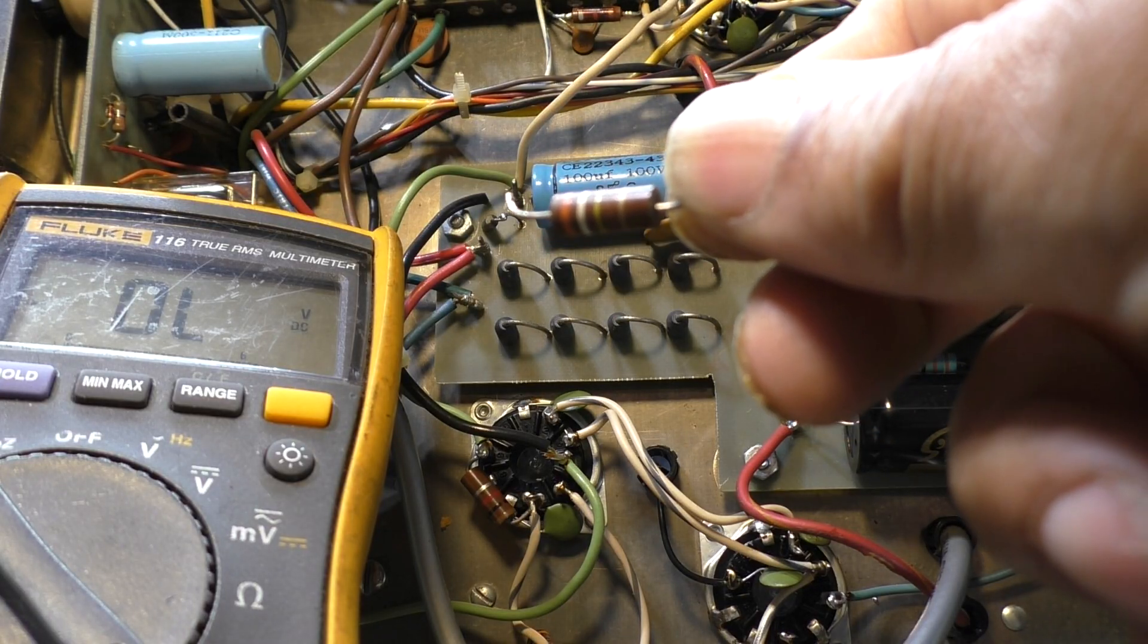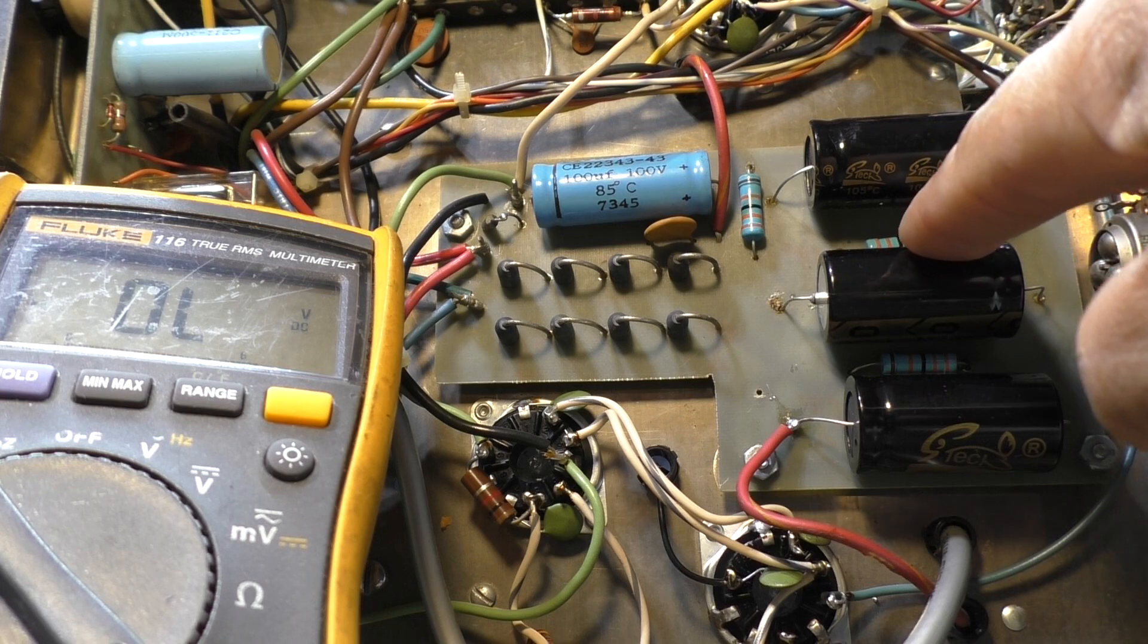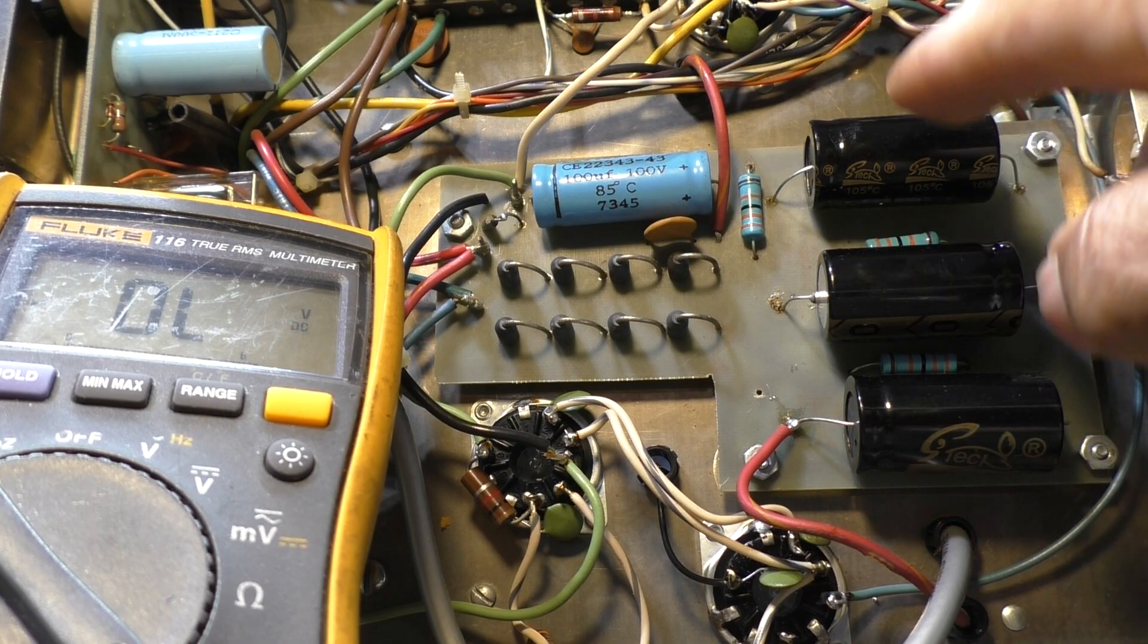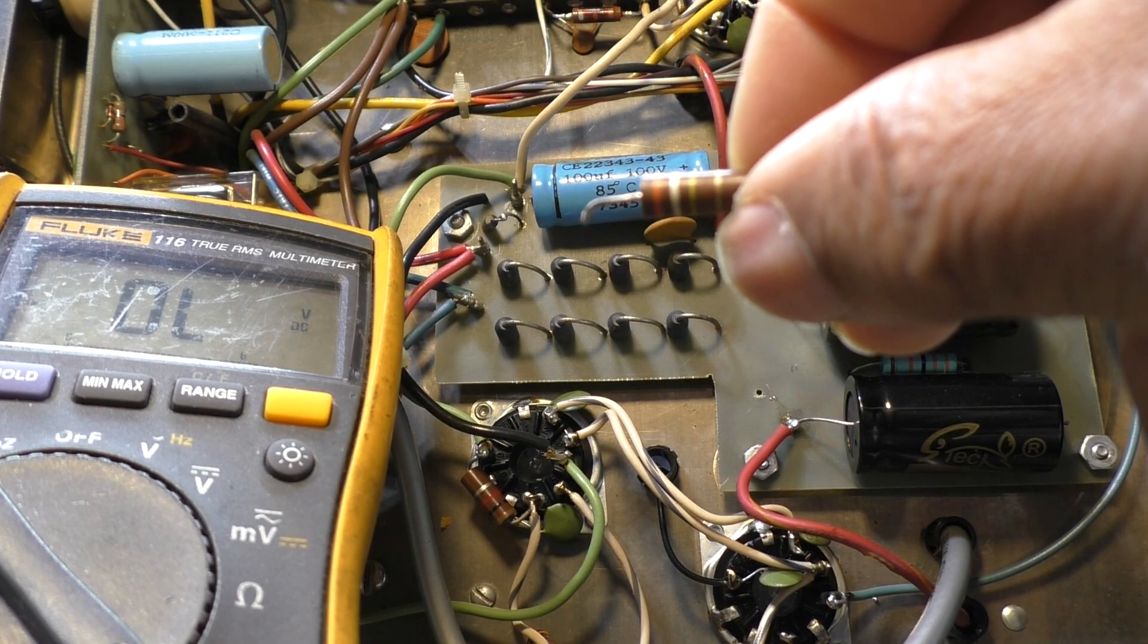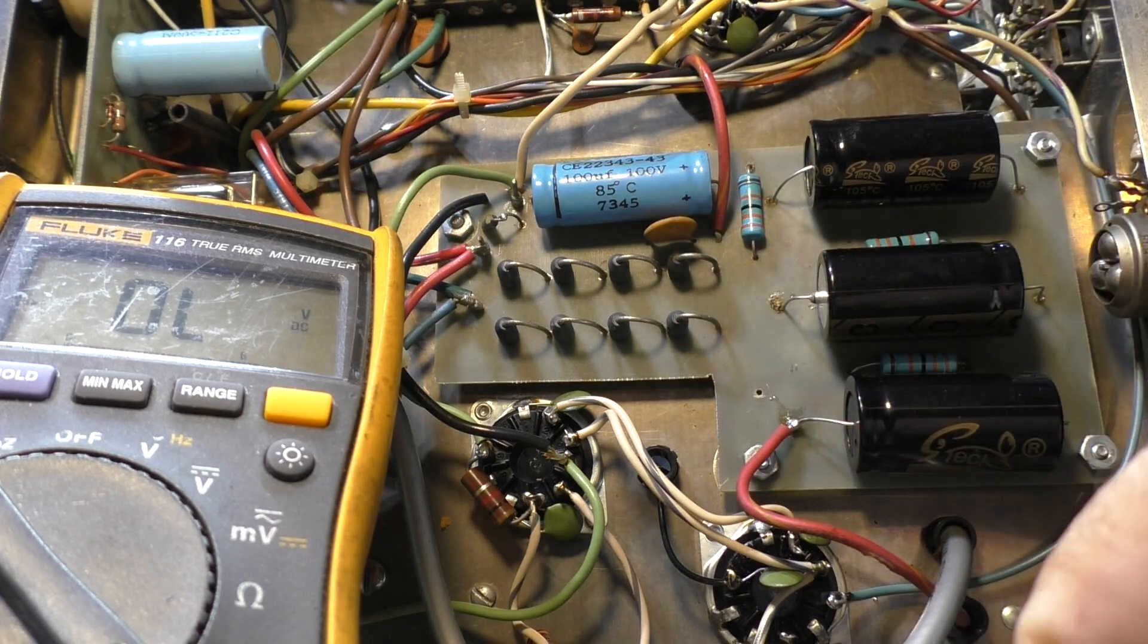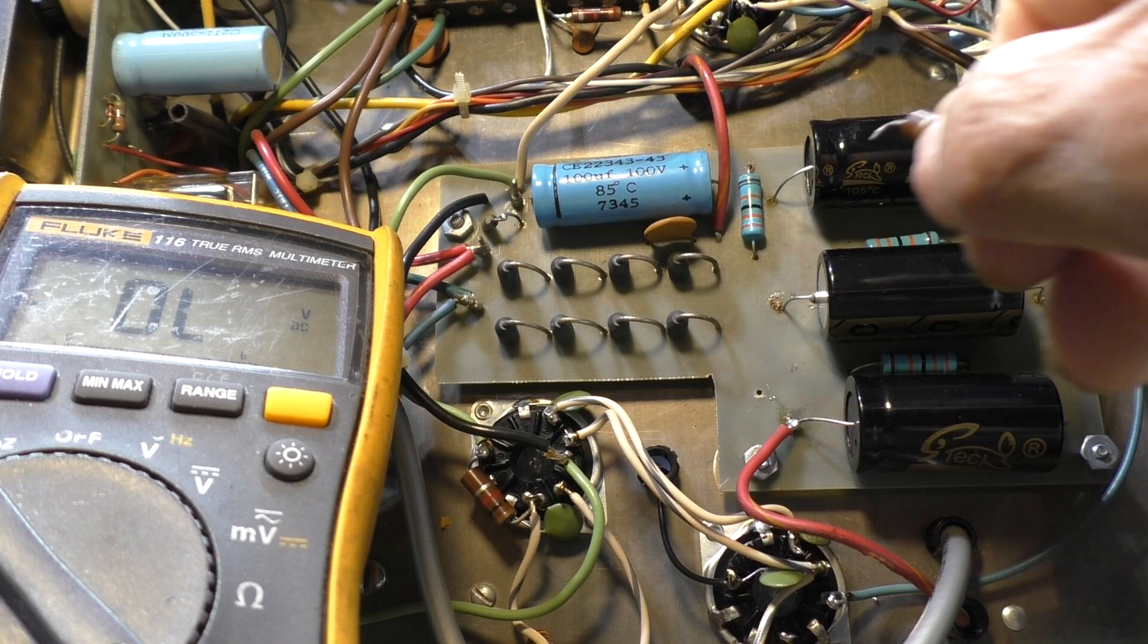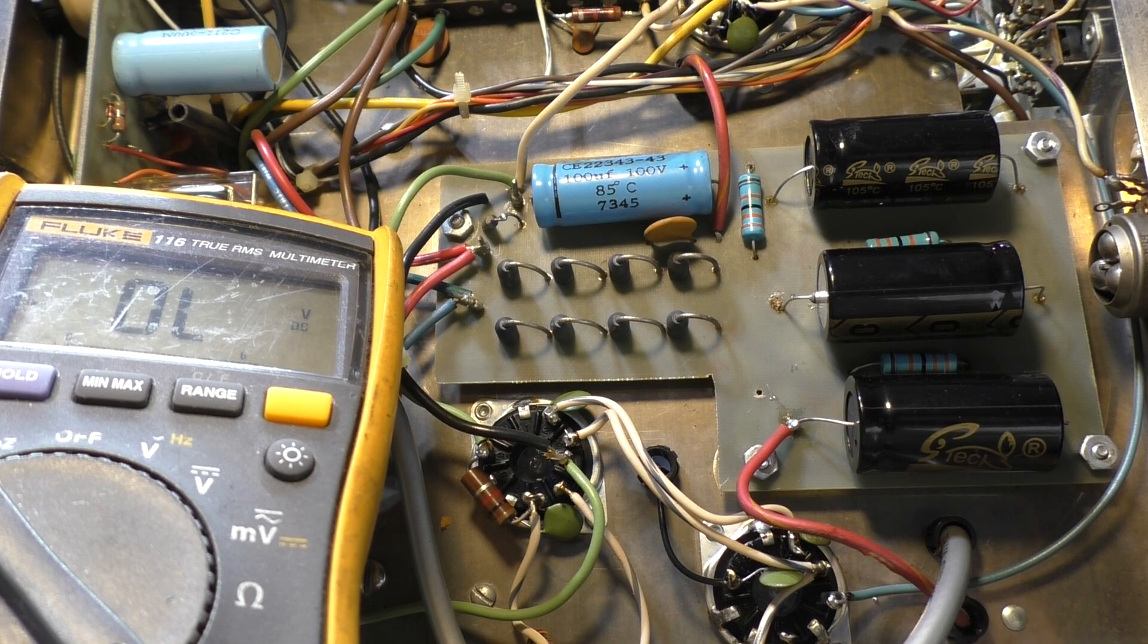Once I took the caps out, I measured the bleeder resistors because in circuit the cap is interfering with your resistance measure of the bleeder. So first I rip out the capacitors, then I test the bleeders. These were way out of tolerance - supposed to be 390k and they read like 410, 440, 450, so they're drifting up. I put in new equalizer bleeder resistors while I had the caps out.